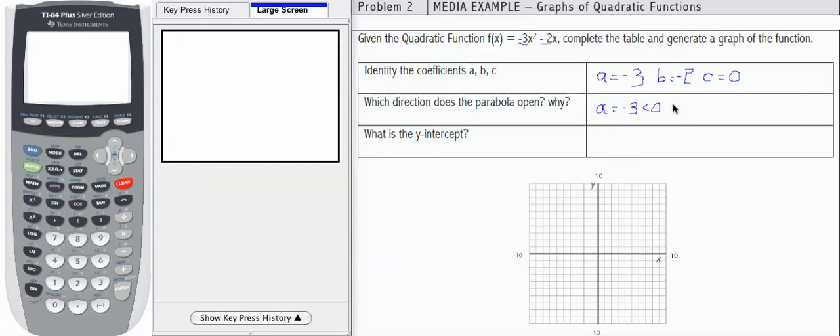If a is less than 0, then the parabola opens down. And we'll see that when we draw our graph here in just a minute.